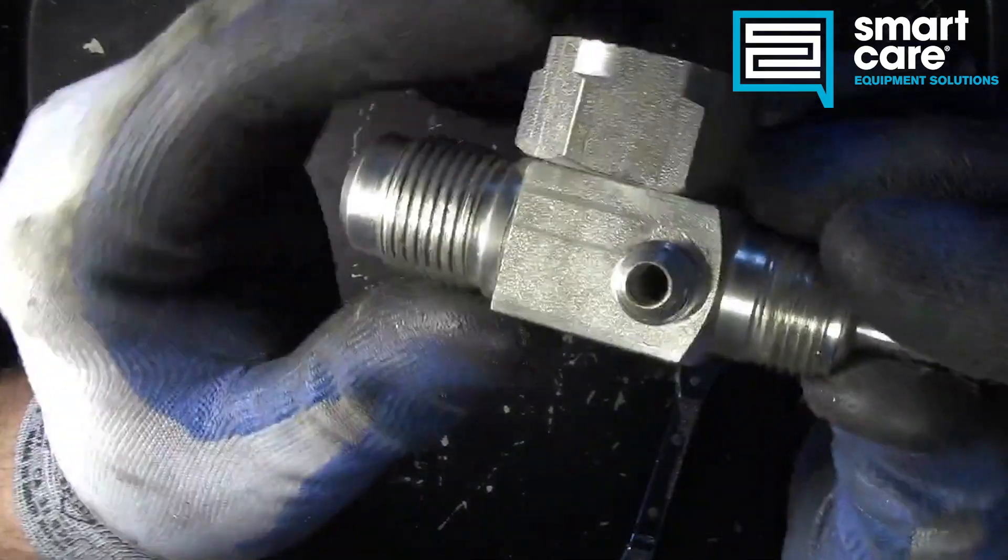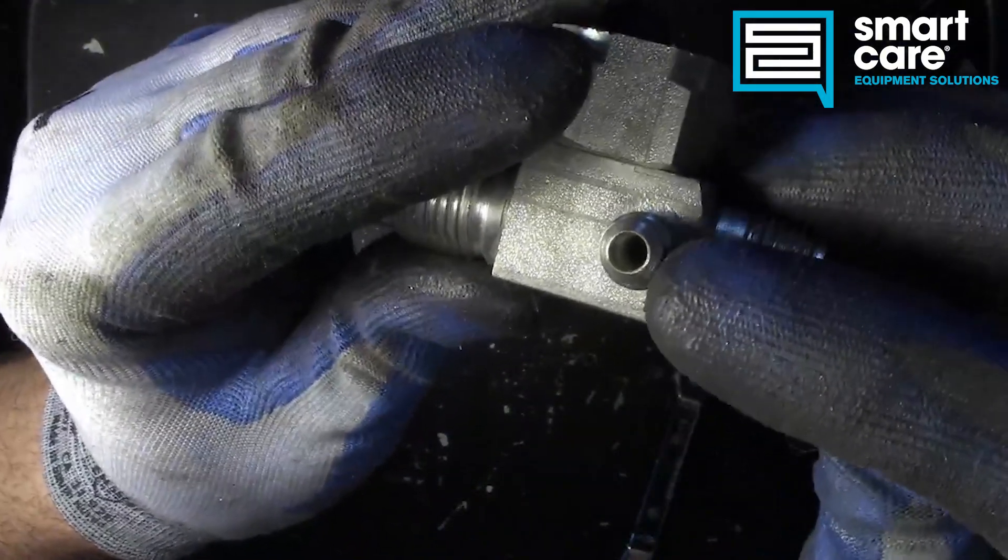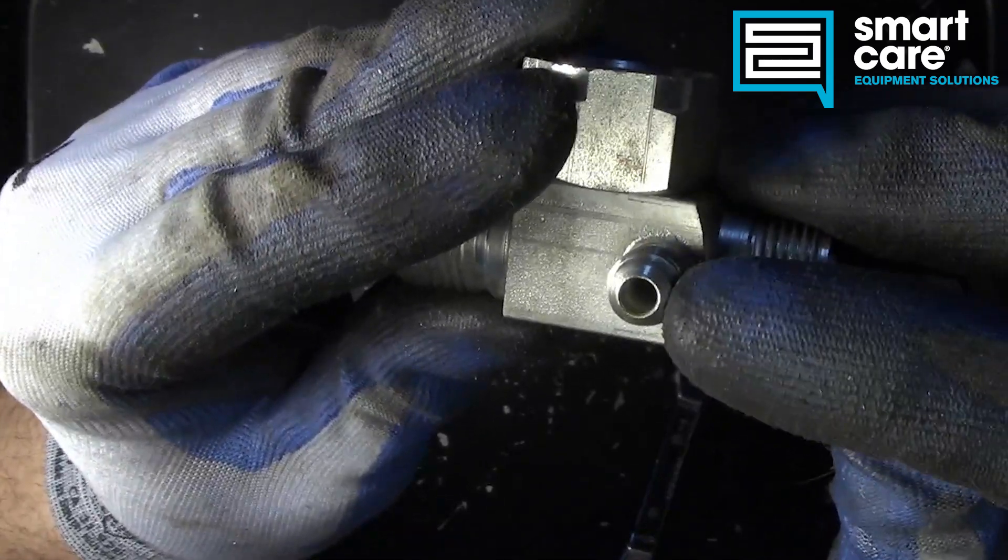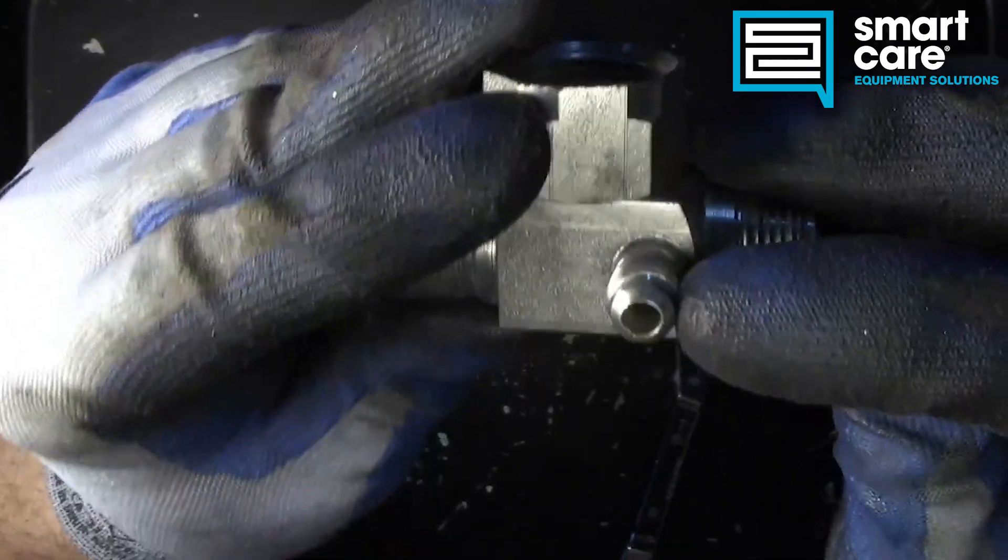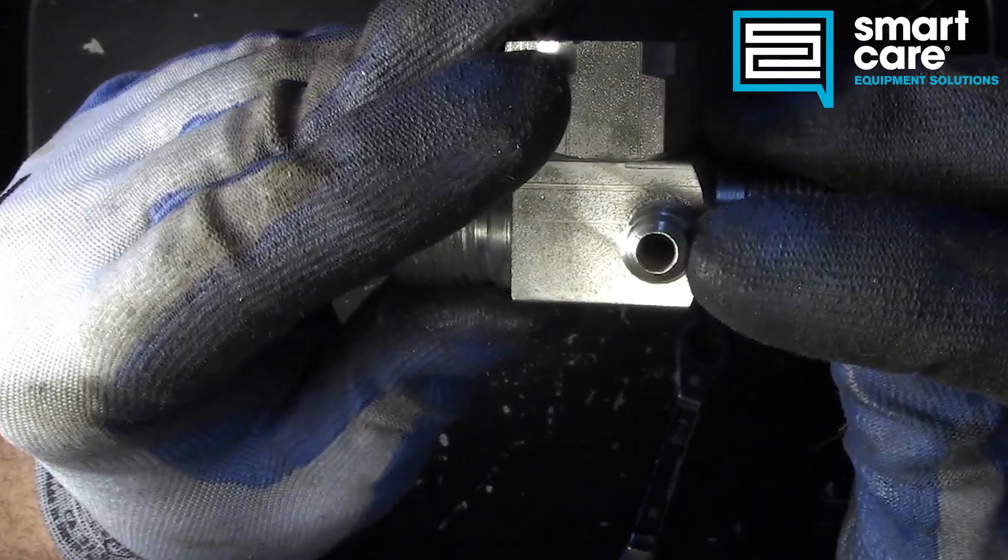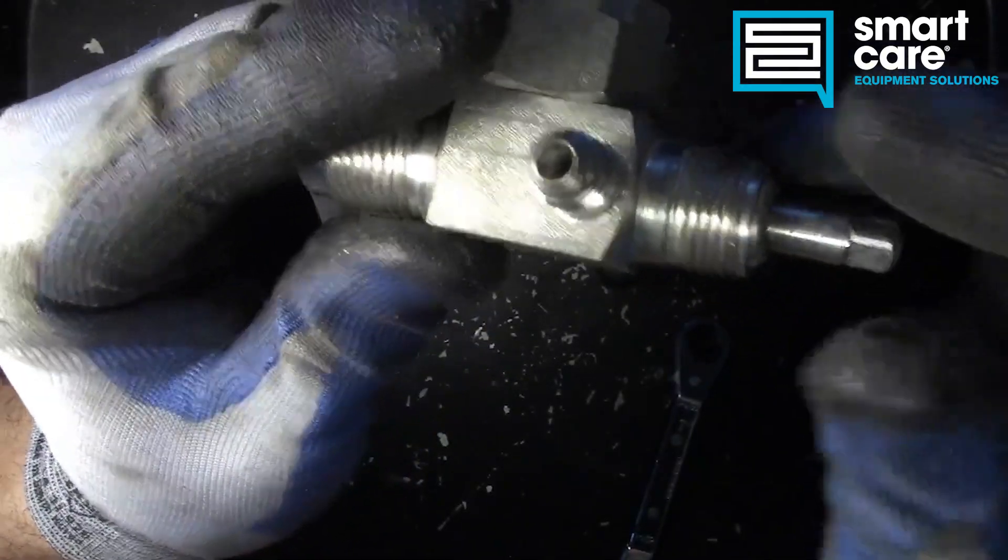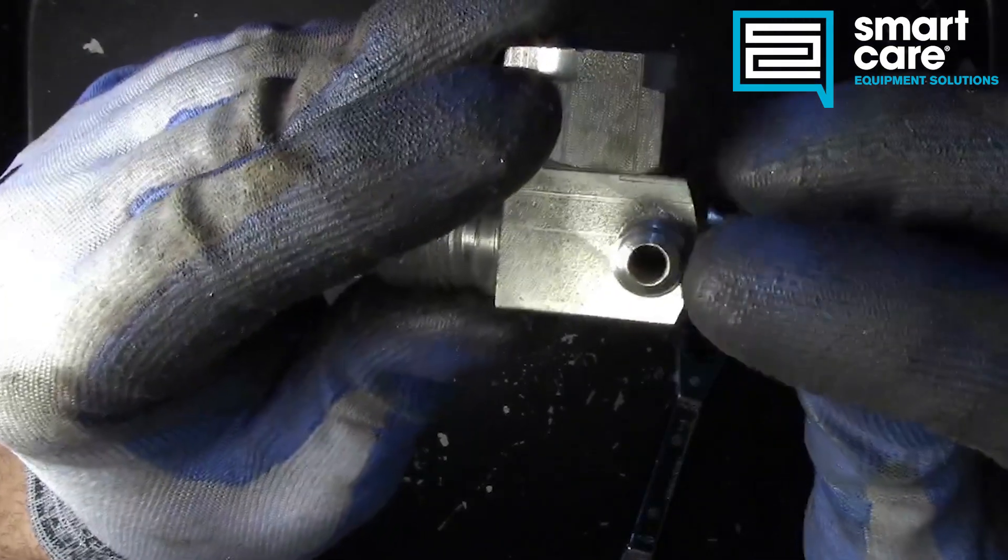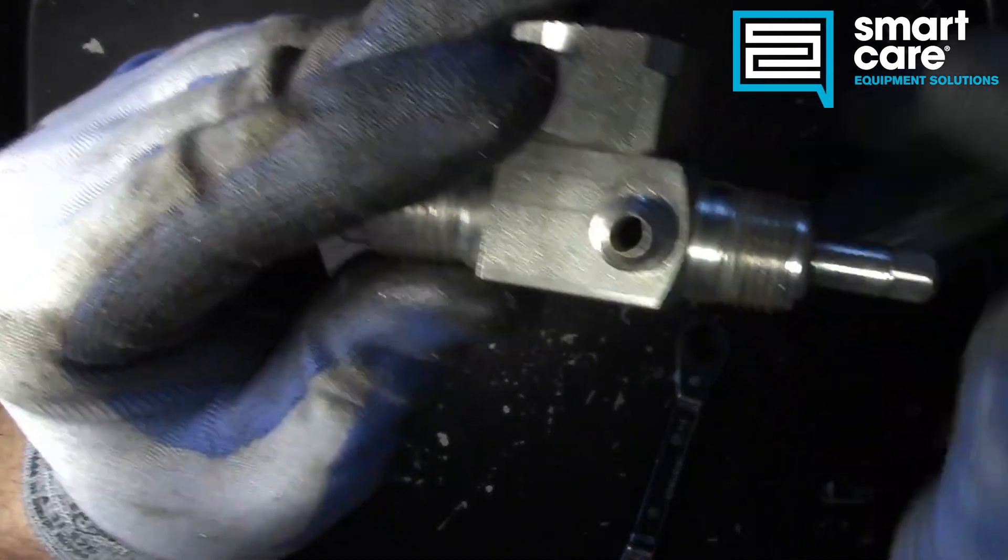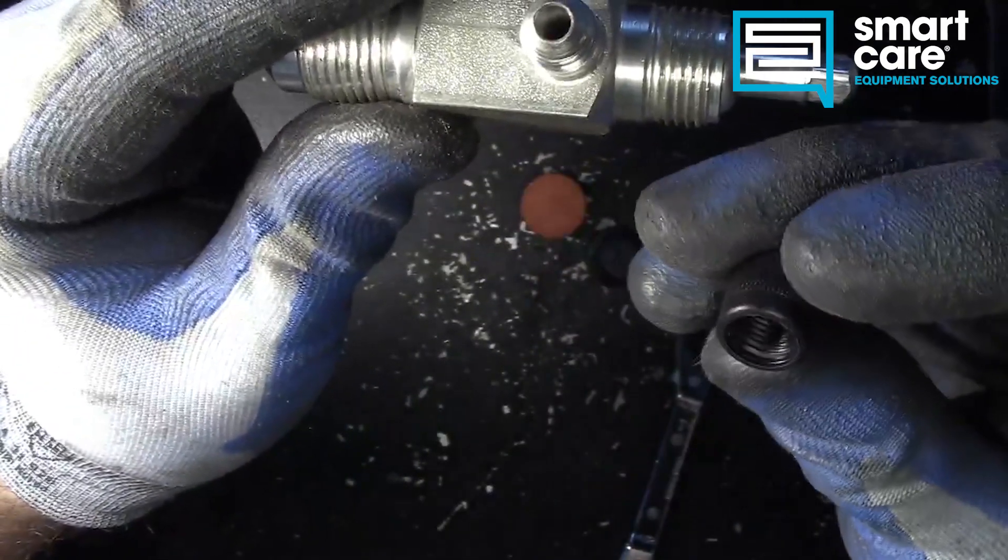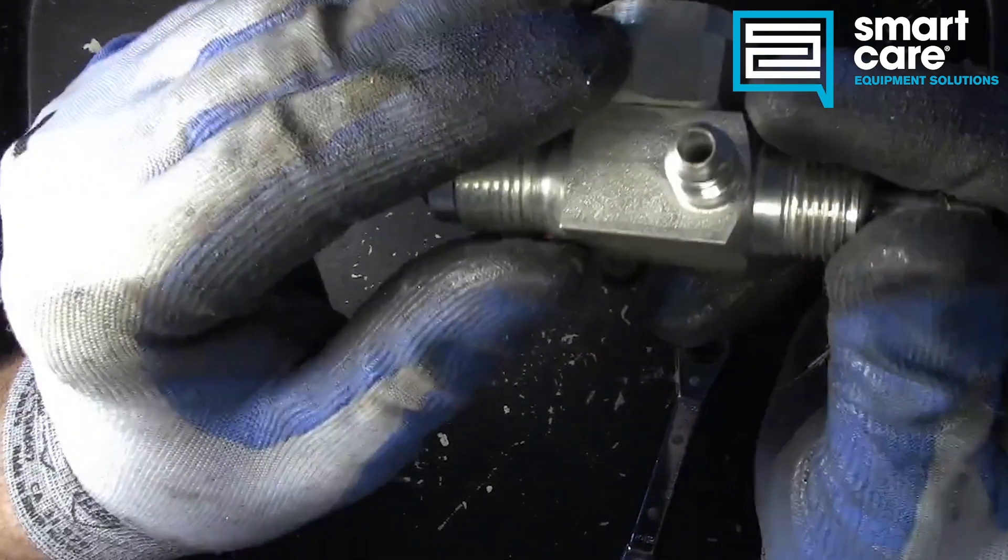It's very important to recognize the position you need to be in to have flow or not have flow to your service port, because this does not have a Schrader valve. So at any time other than a full back-seated valve, you have refrigerant to this service port. And if it just has this cap on it, that's not going to be enough. You're going to start losing charge.